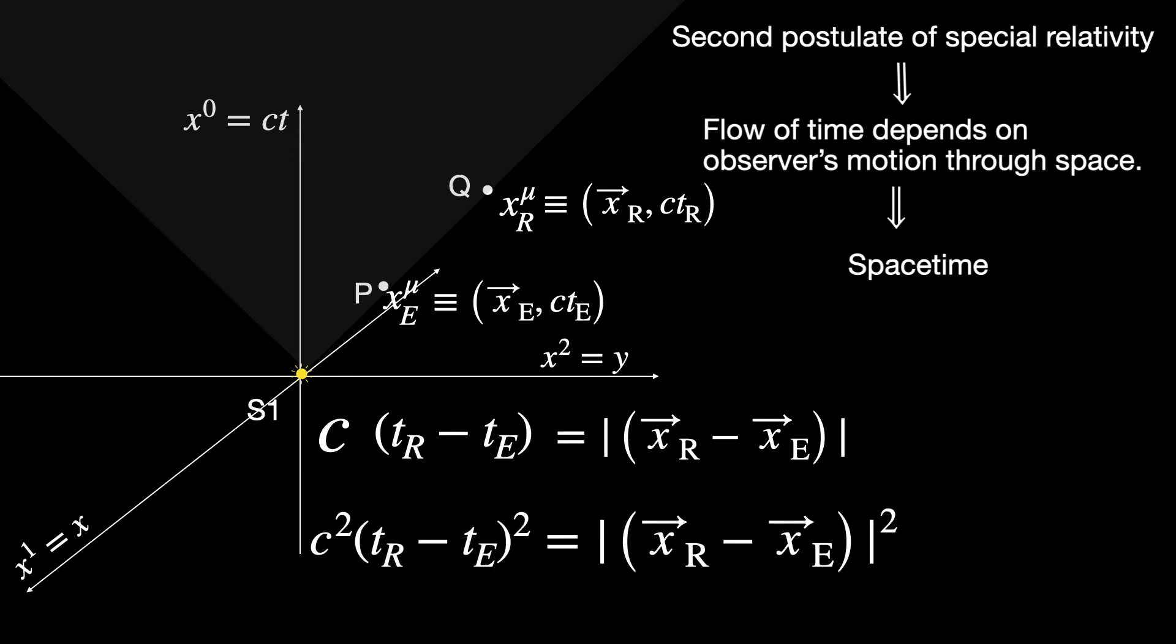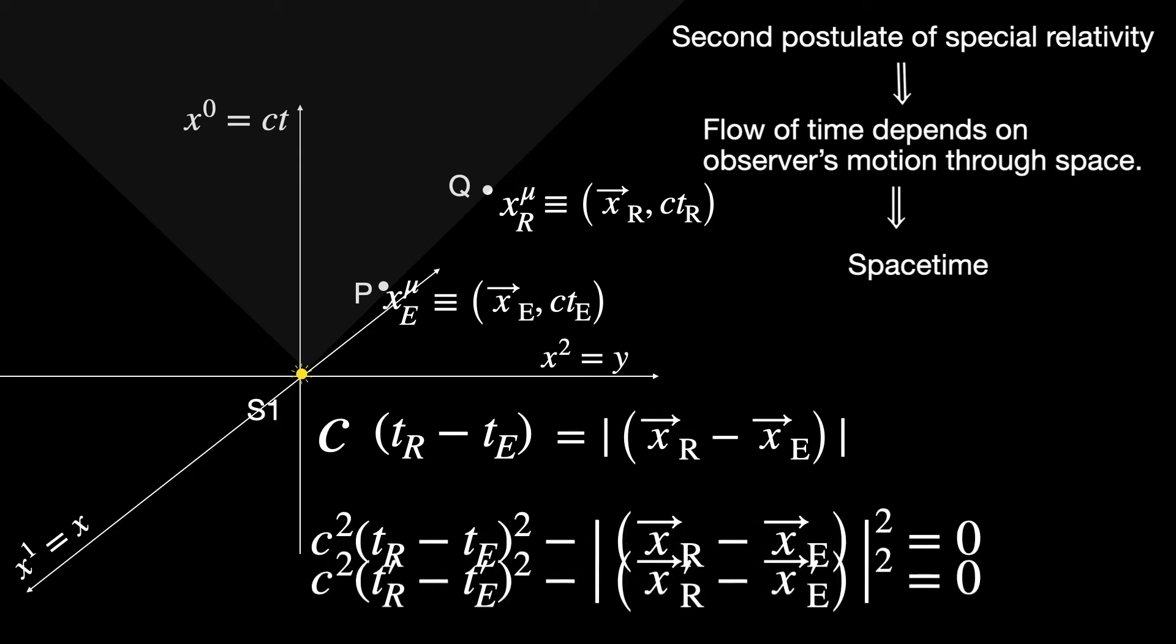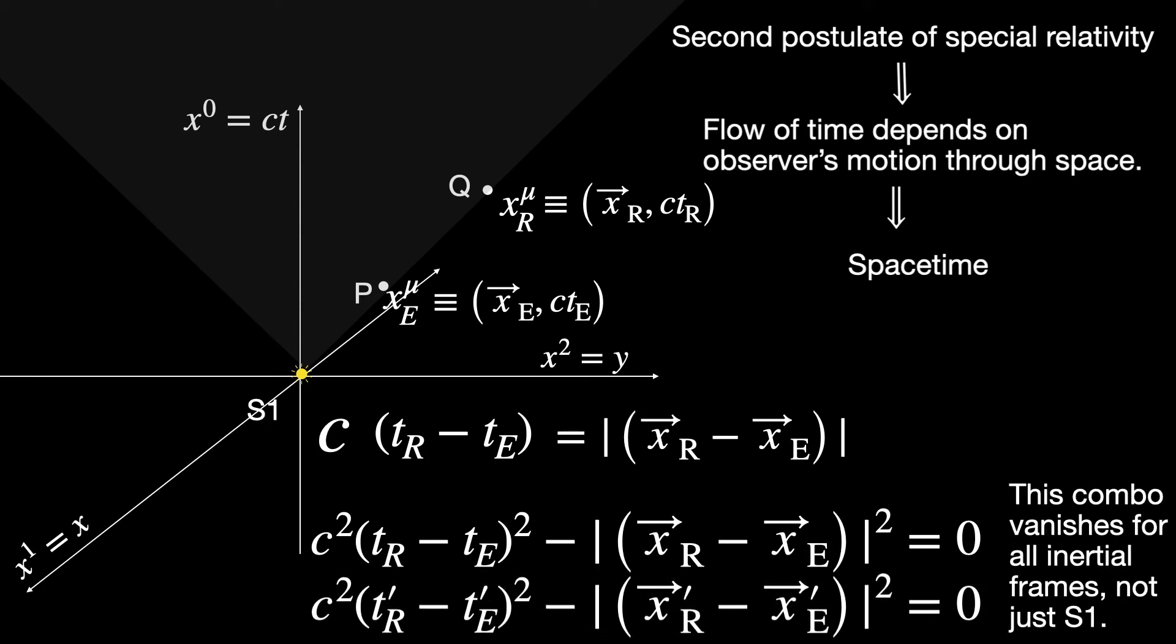A relation like this holds among the spacetime coordinates of any such pair of events connected by photon world lines. We can obtain a useful entity from this relation if we choose to bring everything to the left. On the left we then get a unique combination of temporal and spatial coordinate differences for a given pair of events. A combination that always vanishes if the pair is connected by light signal. For such a pair this particular combination vanishes not just for observers in our S1 reference frame but for observers across all inertial reference frames. For example, if you consider a second inertial frame S2, the observers there will assign a different set of spacetime coordinate readings for the same pair of light emission reception events P and Q. Let's say prime coordinates X'_E^μ and X'_R^μ. Since the speed of light is the same in S2 frame as well, that is just c, the components of the primed spacetime coordinates are going to have the exact same relation and therefore we end up getting the exact same combination that vanishes.